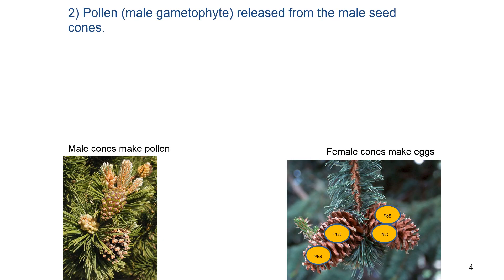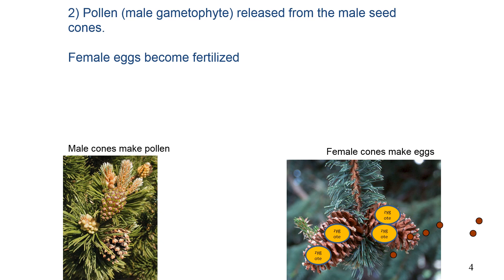Pollen grains are then released from the male cone and carried by the wind to the female cones, where they land. The cones then close, and the next year the pollen grains germinate to produce pollen tubes that grow into the female gametophyte. The sperm cells from the pollen grains and the egg cells fuse to form the next generation's sporophyte.